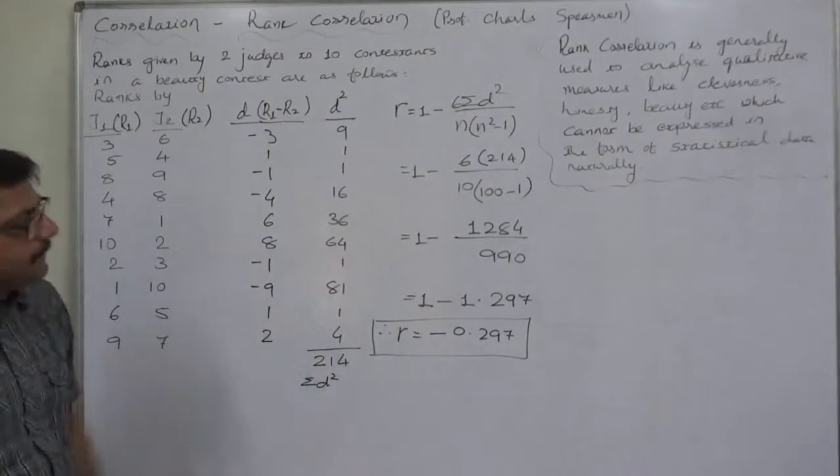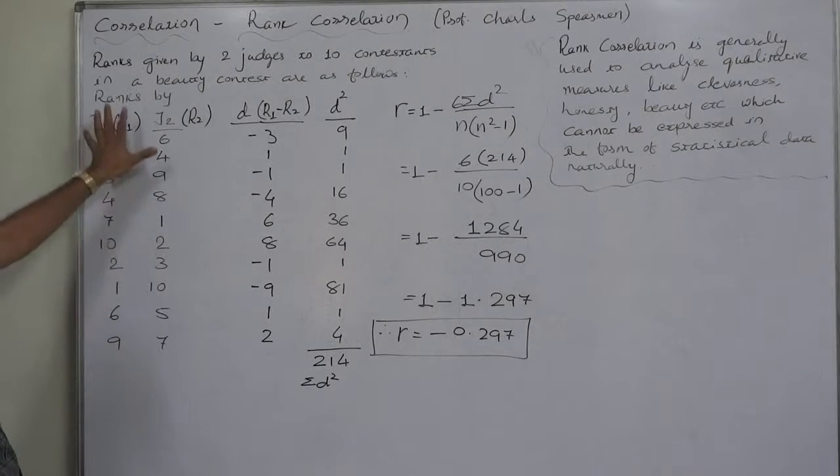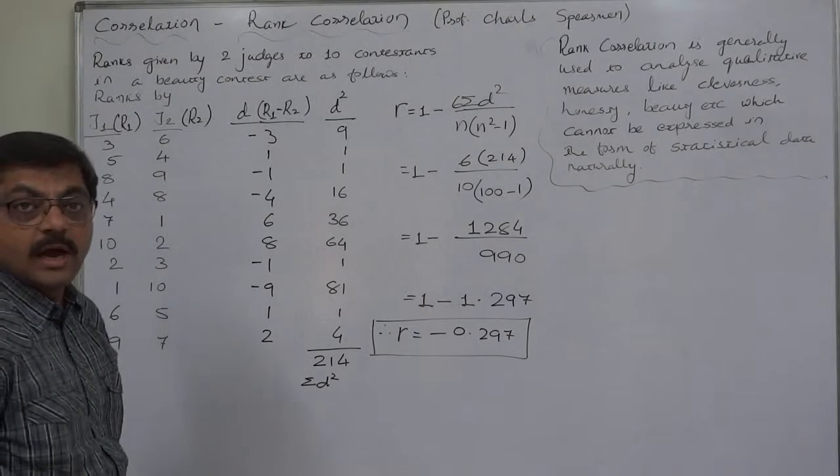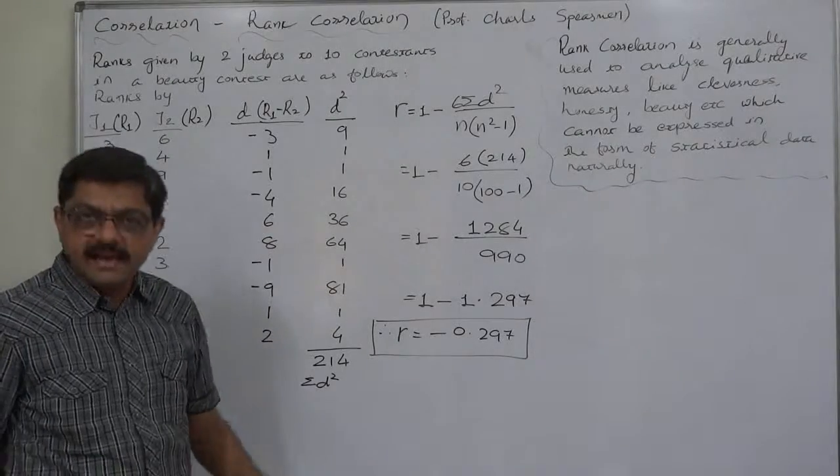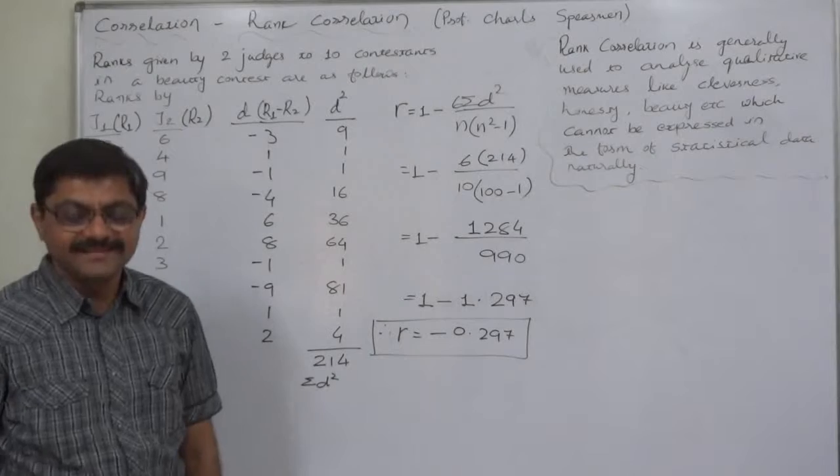So this is very simple. In this case, we discussed the case where the ranks were readily assigned. Now, in the next problem, we are going to learn how to assign the ranks and then to calculate the coefficient of rank correlation. That's it. Thank you very much.